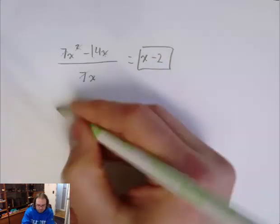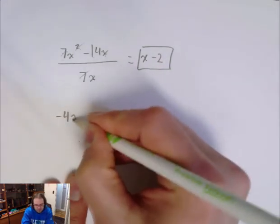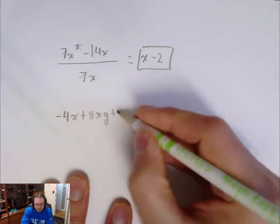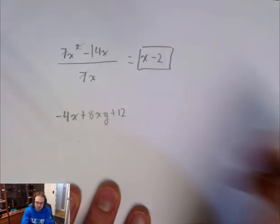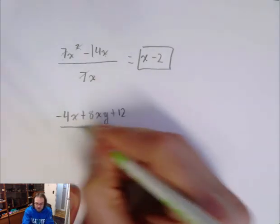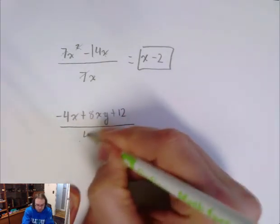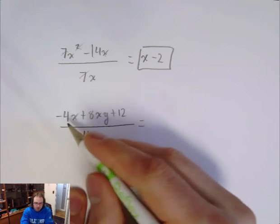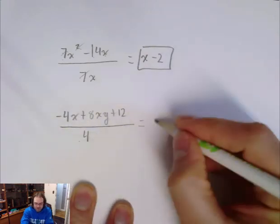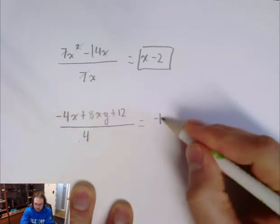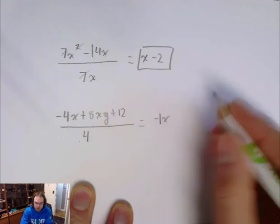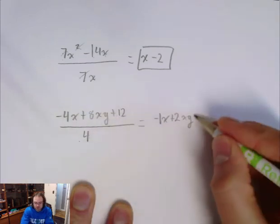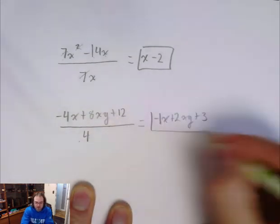Let's try one more — here I have a trinomial and I want to divide it by 4. If I divide this by 4, we go negative 4 divided by 4 is negative 1, and we have an x because there's no x to be divided. 8 divided by 4 is 2, and then we have an xy. And then 12 divided by 4 is 3. And there is my answer.